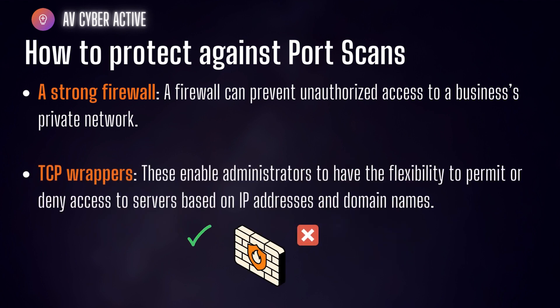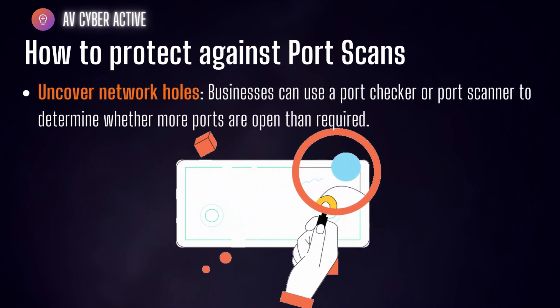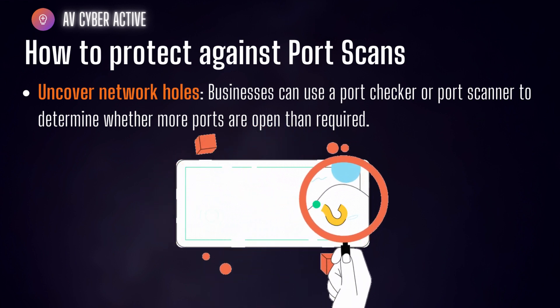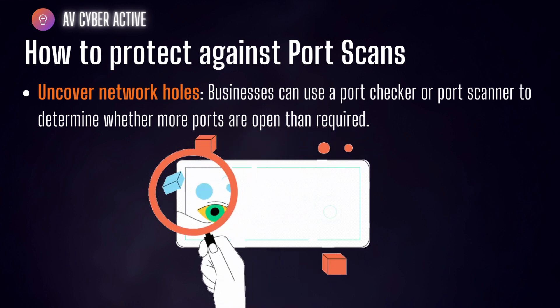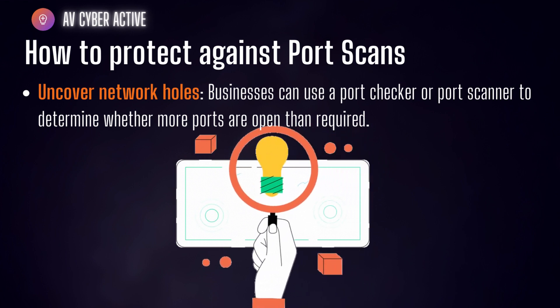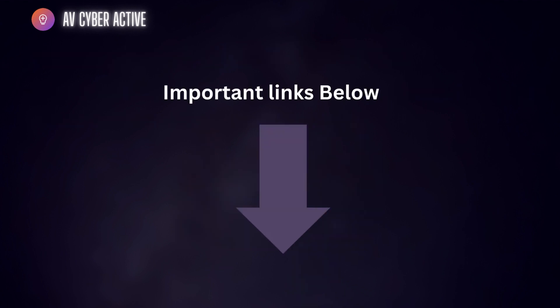Second is to have TCP wrappers — a setting in the firewall that permits or denies access to servers based on context like IP addresses and domain names. Third, and the most important one, is to uncover network holes. This means organizations can use a port checker to data mine open ports, and this needs to be regularly used to check and report vulnerabilities that have the potential to get exploited.